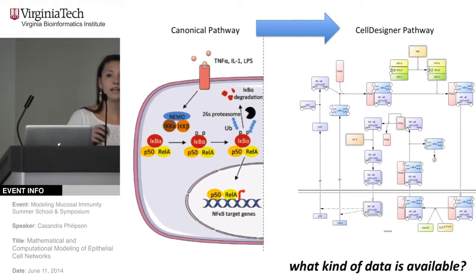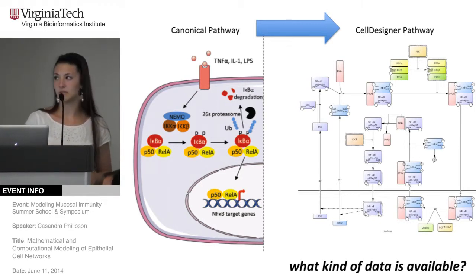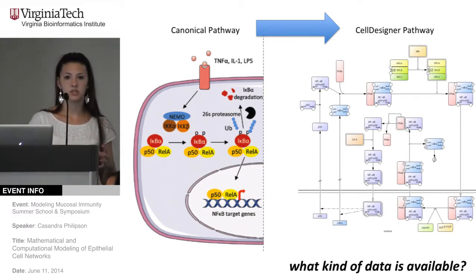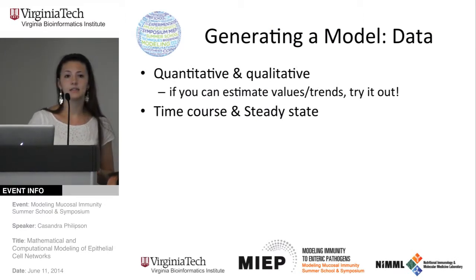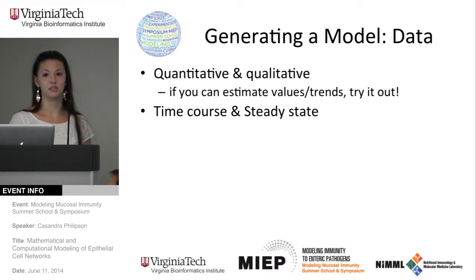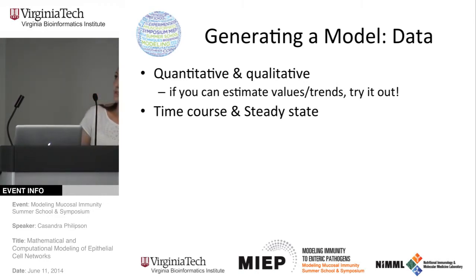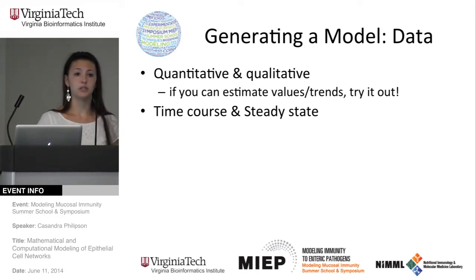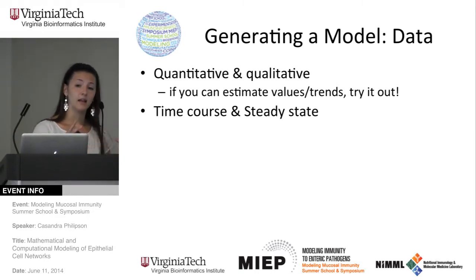A big question when you create your model is: what kind of data do we have available to calibrate it? This is a huge deficit in the literature. It's really hard to find rich data over time that matches your questions. You can use both qualitative and quantitative data. If you can estimate values and trends from qualitative data, put some fractions into an Excel database and use that to calibrate. Time course data is really excellent, but steady state data is also really important — Audrey used a lot of steady state data to calibrate his model.